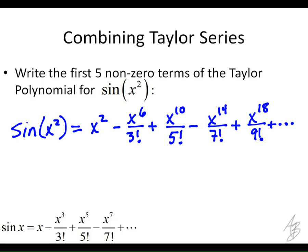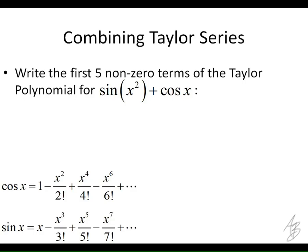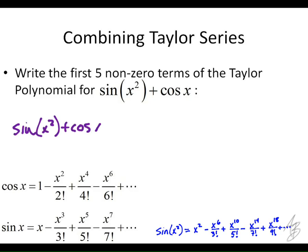That one's pretty easy, right? So how about this one? Sine of x squared plus cosine of x. We just did sine of x squared. Here's our sum for sine of x squared. So we want to do sine of x squared plus cosine of x. What's our first term going to be? Sine of x squared plus cosine of x is going to be 1. That comes from the cosine. Then what?